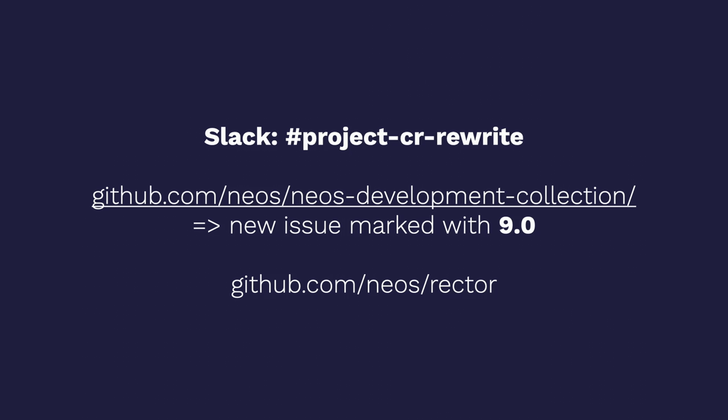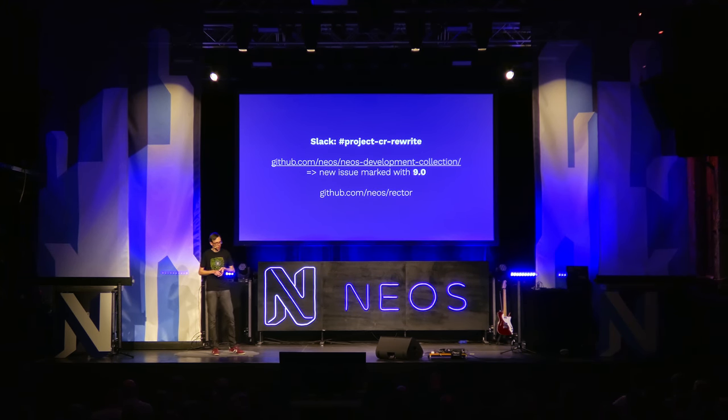Please report issues so we can increase automatic migration coverage. Rector is already replacing about 50 API calls from the Neos 8 world to the Neos 9 world. Let's look under the hood at what this Rector magic has actually done. To understand it, we need to recap a few definitions. What you see is a typical node tree in English and German, with connections between language versions of certain pages.